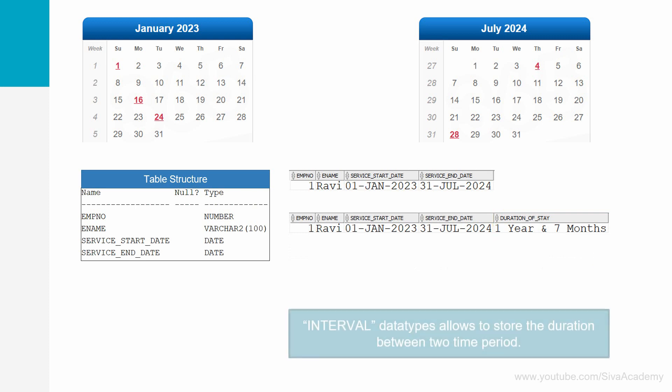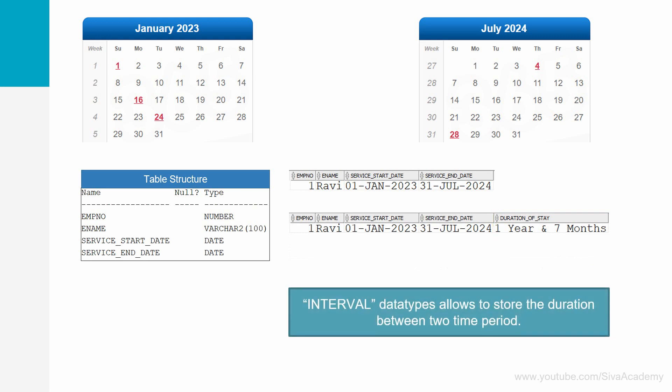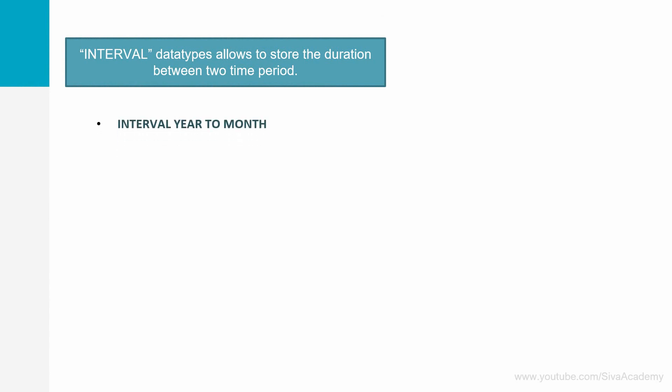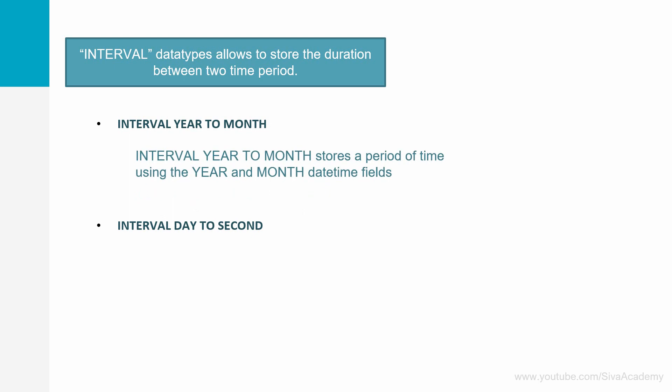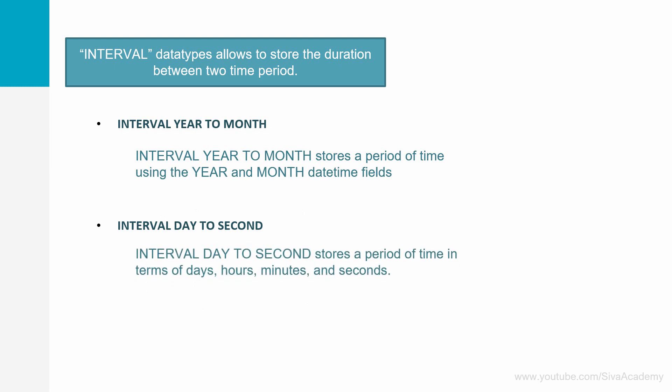The interval data type helps us capture the duration between two specific dates or time periods. Until Oracle 23c, Oracle has provided two types of interval data type: interval year to month, and interval day to second. Interval year to month stores duration in terms of year and month, while interval day to second stores duration in terms of days, hours, minutes, seconds, and even fractional seconds.